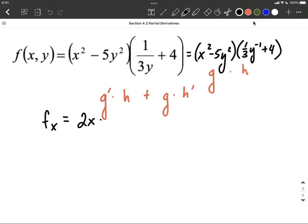Next, we want to copy down h, and you could use either version here. I'm going to use the one with the negative initially. Plus, we copy down g, so x squared minus 5y squared.